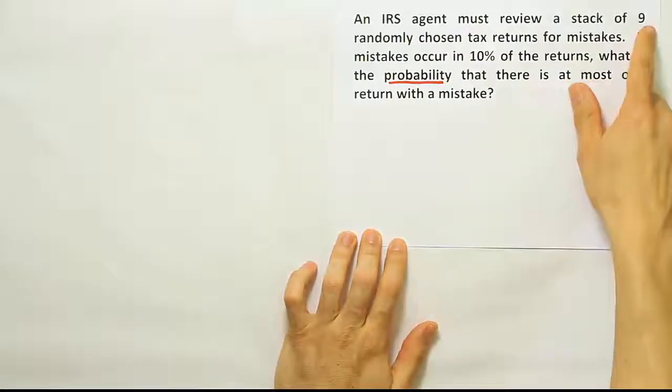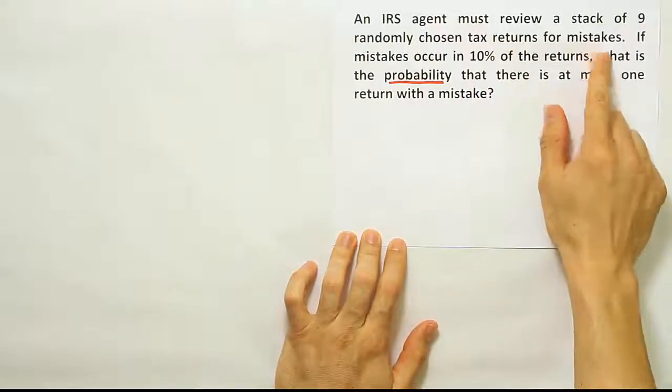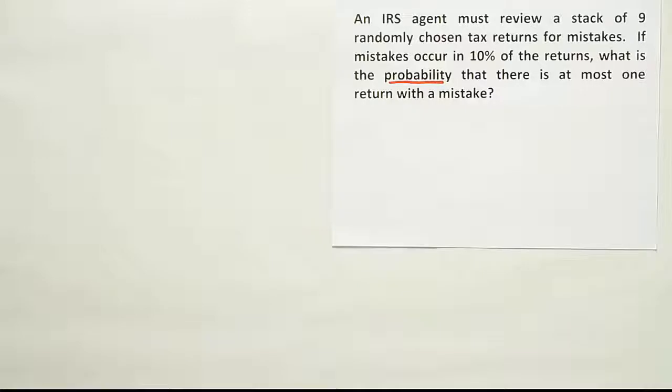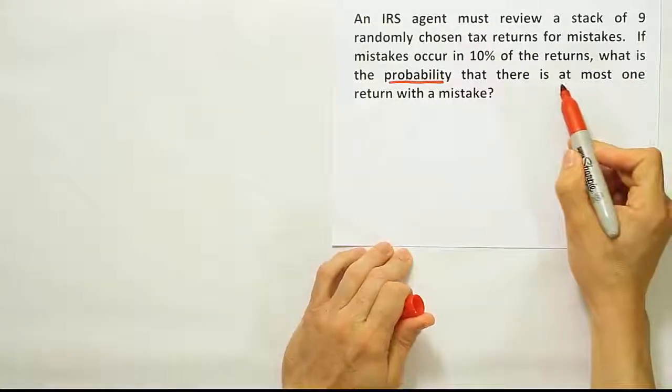We're looking at nine randomly chosen tax returns and we're looking for the probability that at most one return has a mistake. If it said the probability of at least one has a mistake, then I would think it's that technique. But here it says at most one return has a mistake. So in this case, I'm pretty sure that it's binomial probability.